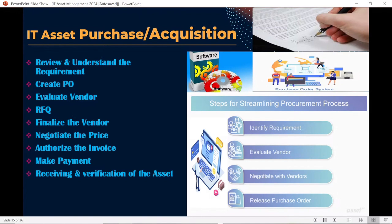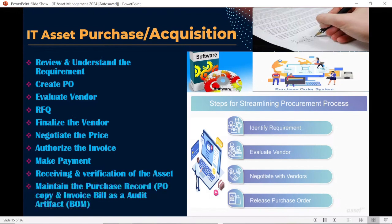Once assets are received and validated, the next step is to maintain artifacts such as contracts, PO documents, and the BOM — Bill of Materials. These need to be maintained because during audits, you need legal documents proving you are the authorized user of that product. To avoid audit risk, it is strongly recommended to maintain all purchase legal artifacts in a centralized and secure repository within your organization.